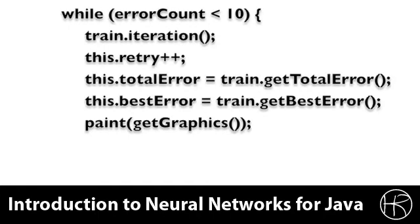We are going to loop until we have an error count of 10. What an error count of 10 really means is that we have had 10 iterations where the training has not sufficiently improved the neural network. Each time through, we are going to perform an iteration. We are going to increase the retry count so that we know the total number of tries that we have made, and we are going to obtain the total error and the best error from the training object.